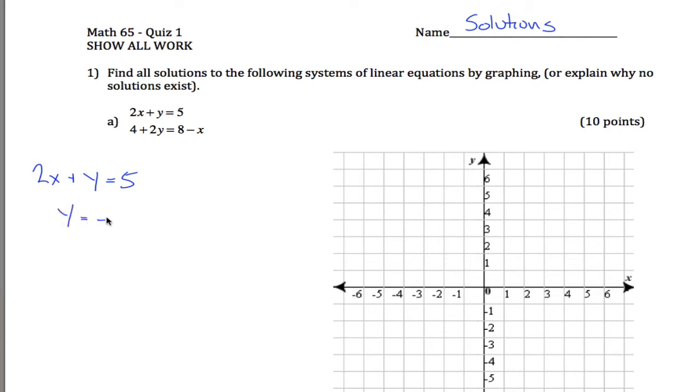So if I subtract 2x from both sides, and if I write the negative 2x first, now it's in y equals mx plus b form. Specifically, the slope is negative 2, or if you want to write it as a fraction, negative 2 divided by 1. And the y intercept is 5.